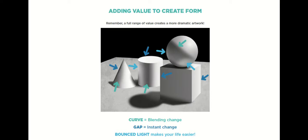Looking at the picture on your screen, you can see value through lights and darks that show how objects with form create different value effects. There are three different colored words at the bottom — a tealish color, a darker blue, and a lighter blue. When you see a curved area, indicated by the teal arrows, there will be a smooth, ombre-like blending change going from light to dark to light again — a very gradual transition.